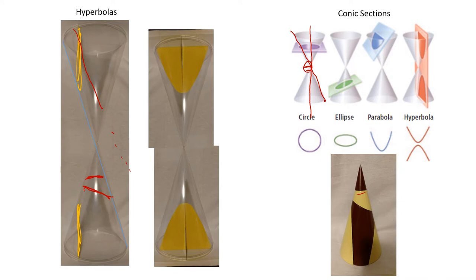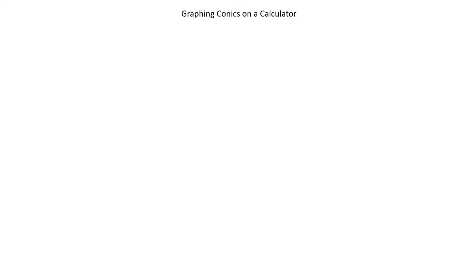Seeing all of the cuts at one place: one cut makes a circle, another makes an ellipse, the cut parallel to the side makes a parabola, and the vertical cut makes a hyperbola. I'll try to have a physical cone model in class so you can see it and play with it a little bit.